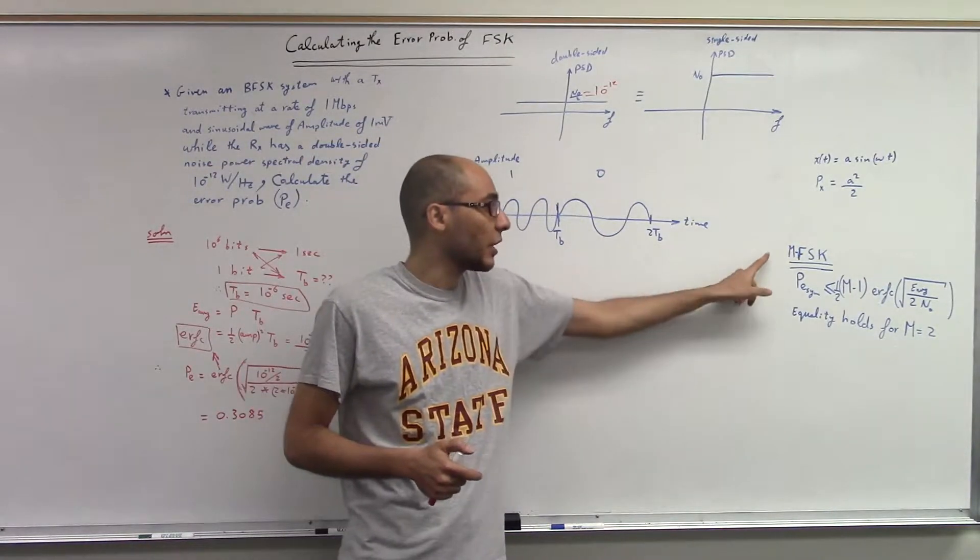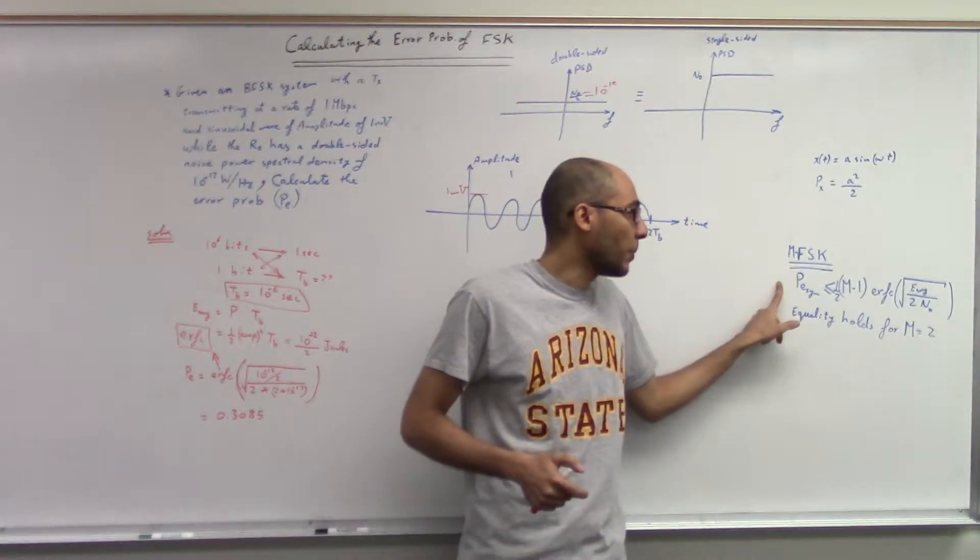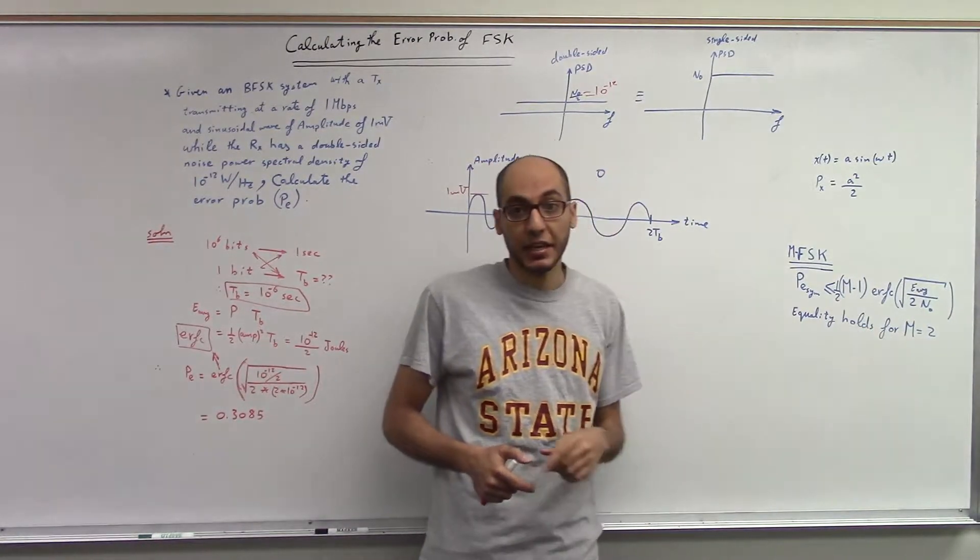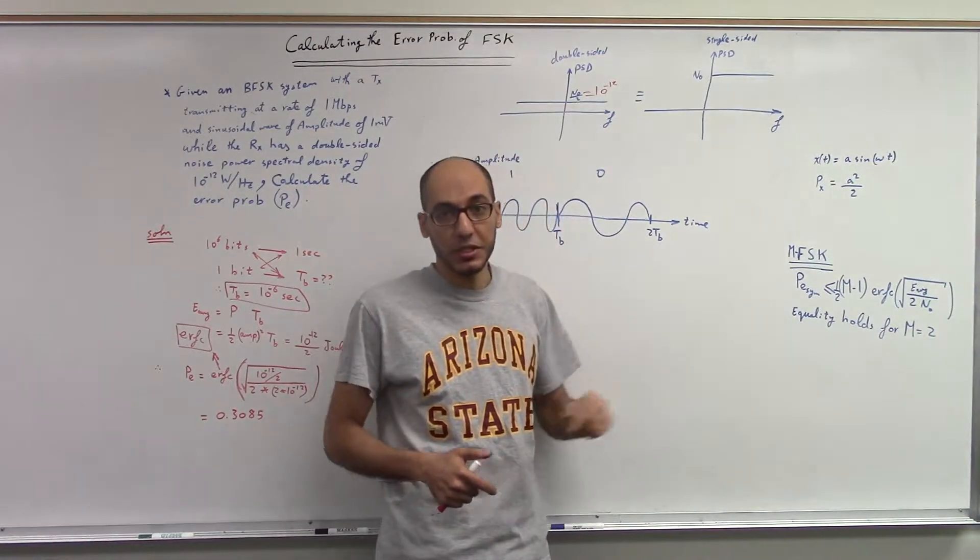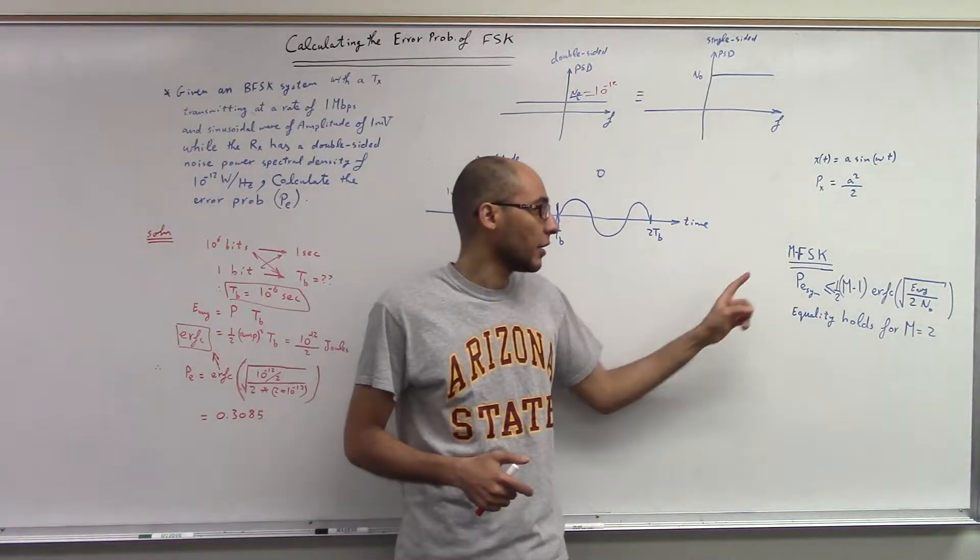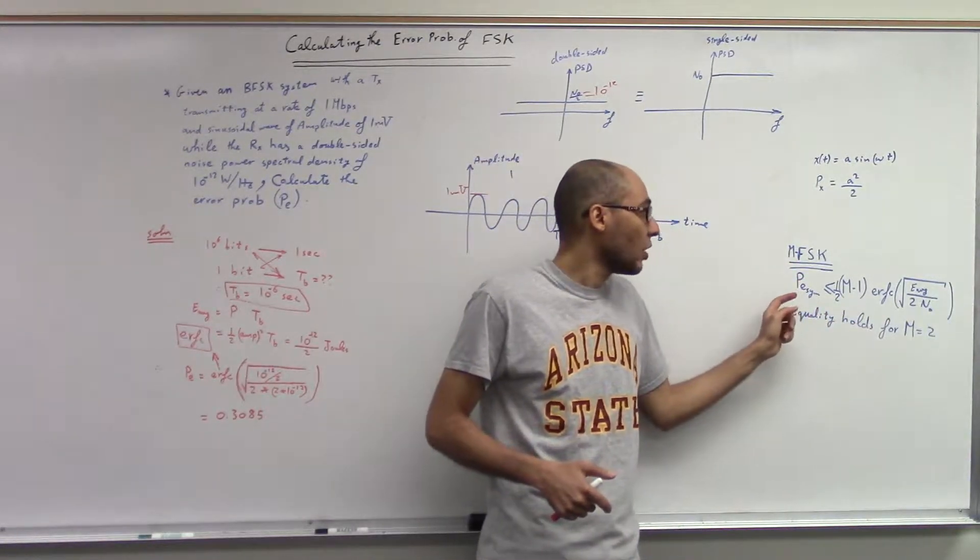In frequency shift keying, in M-ary frequency shift keying, we have the probability of symbol error given by a bound and not an exact formula. Why is that? Because we do not have an exact formula for the probability of symbol error in frequency shift keying. That's why we have to use this bound.